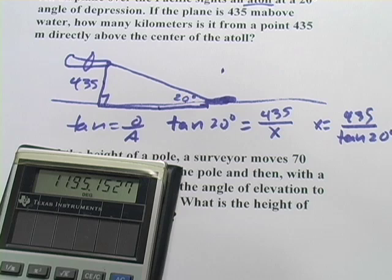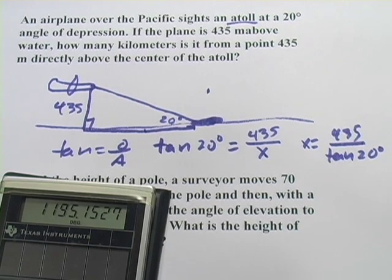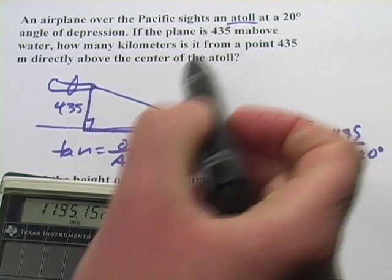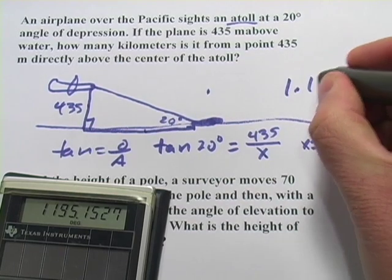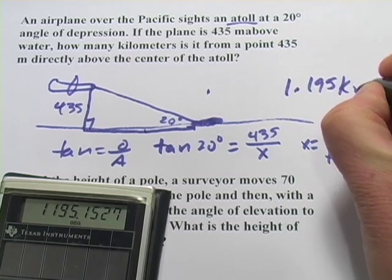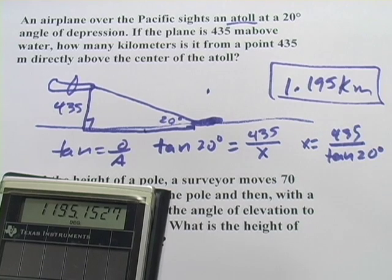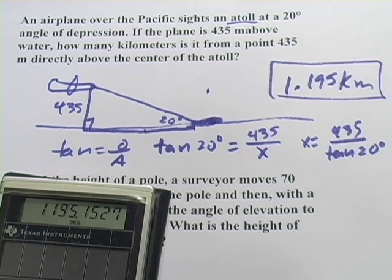We have to be a little bit careful about the problem here because it gave us 435 meters, but it wants to know how many kilometers. So we're going to divide that by 1,000, and we get 1.195 kilometers as our answer. Let's try another one.